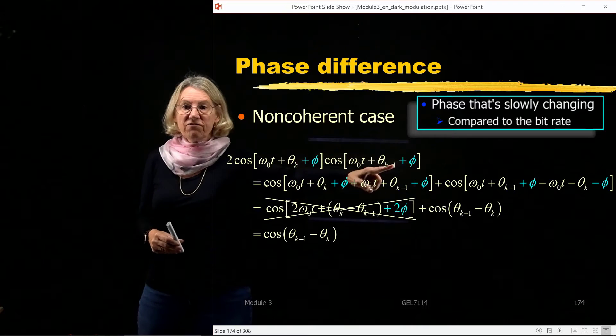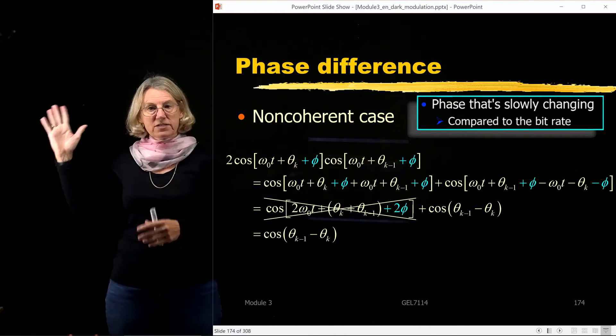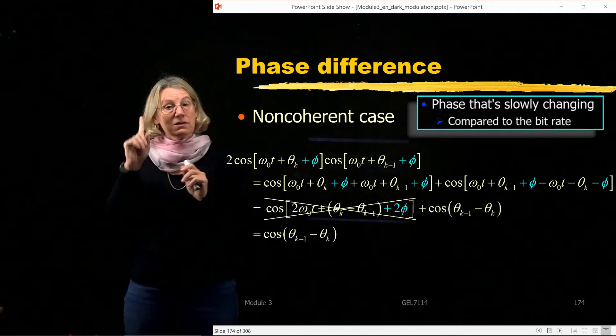So what happens with this drifting phase? Well, I'd have this unknown phi, which is this phase which is changing with time. It's the transmitter and the receiver, they're not coordinated, and there's this phase difference between them.